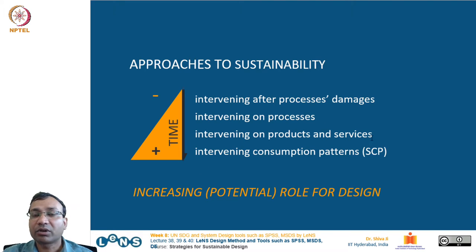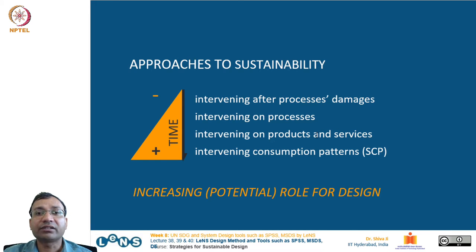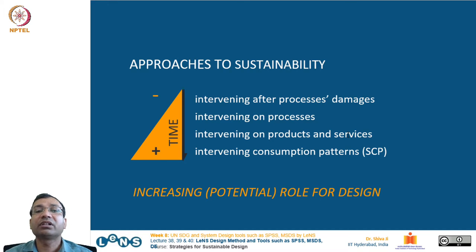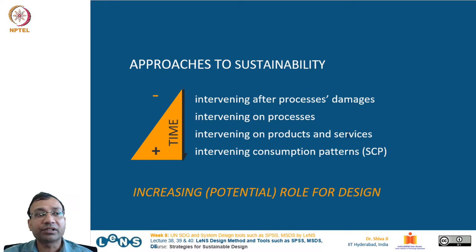The second intervention is on products and services. At the stage where we are designing, fabricating, or manufacturing our product or rendering services, we can use certain strategies to minimize the impact. Further, intervening on processes: once the product or system is in place and under operation, we can minimize the consumption and energy use even at that stage.